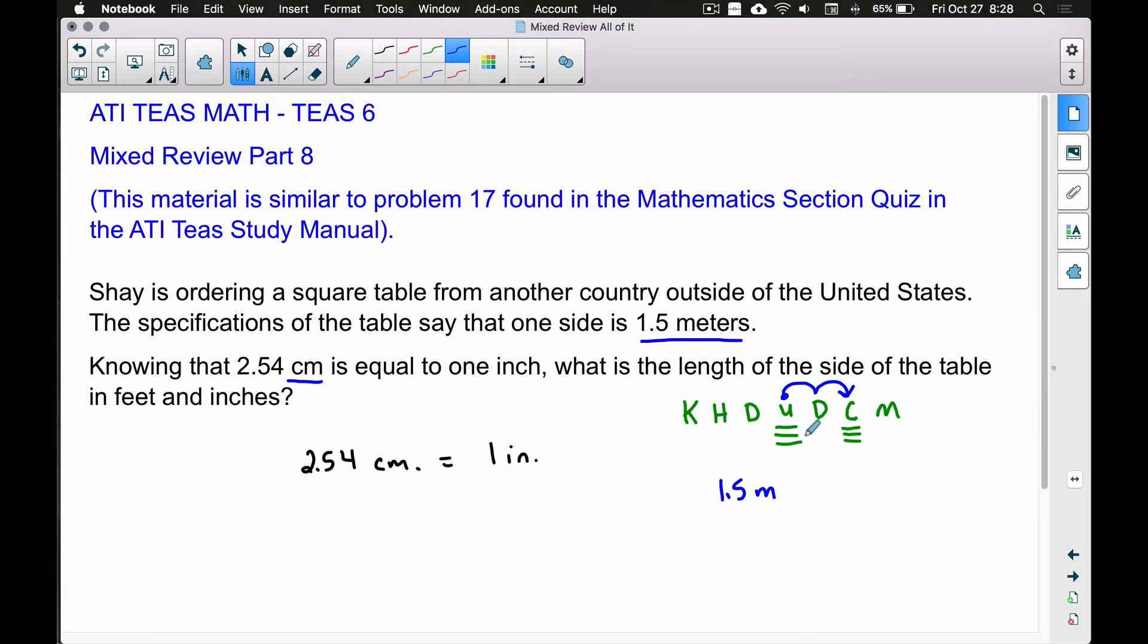This is a little shortcut that you can use when converting amongst the metric system of measurement. This will work for kilo, hecto, deca, the unit, deci, centi, and milli. Therefore, if we move this decimal two places to the right, we're going to have 150 centimeters. I'm just taking that decimal and bumping it two places to the right - that's why we have to add a zero.